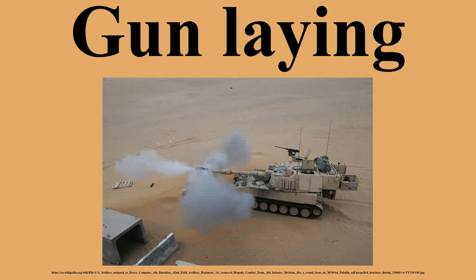Depending on the gun mount, there is usually a choice of two trajectories. The dividing angle between the trajectories is about 45 degrees, varying slightly due to gun-dependent factors. Below 45 degrees the trajectory is called low angle; above is high angle. Low angle fire has a shorter time of flight, a lower vertex, and a flatter angle of descent.